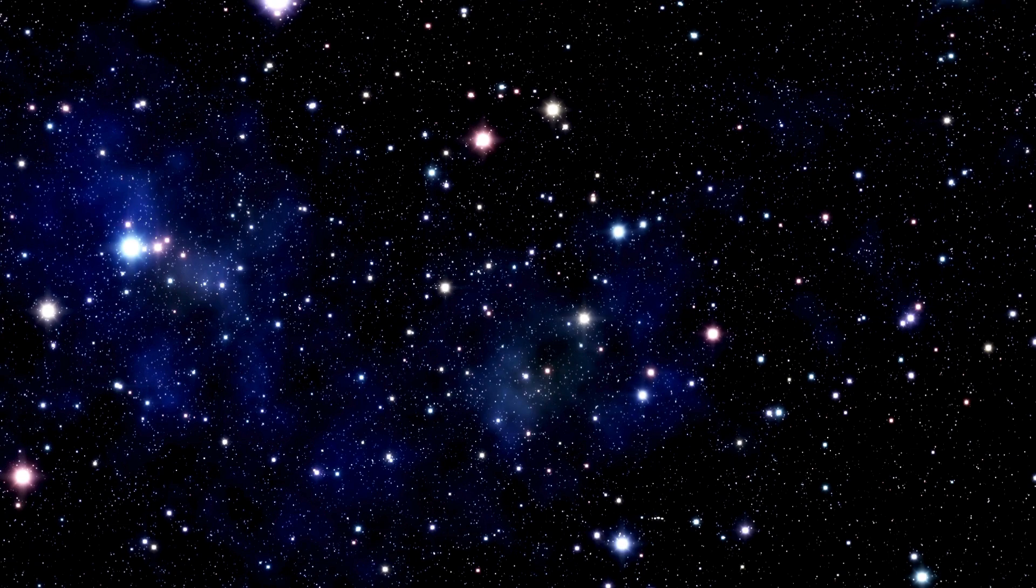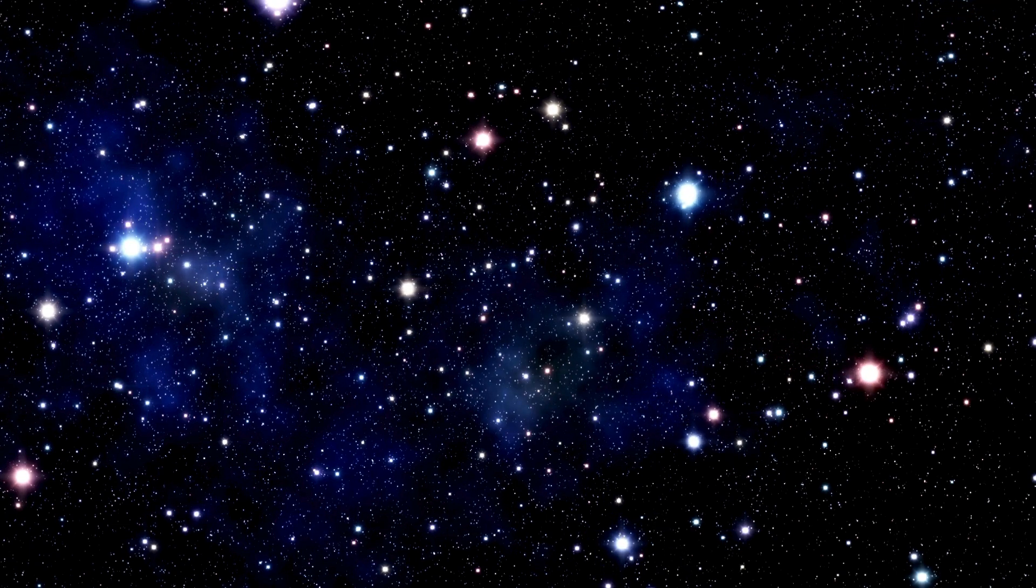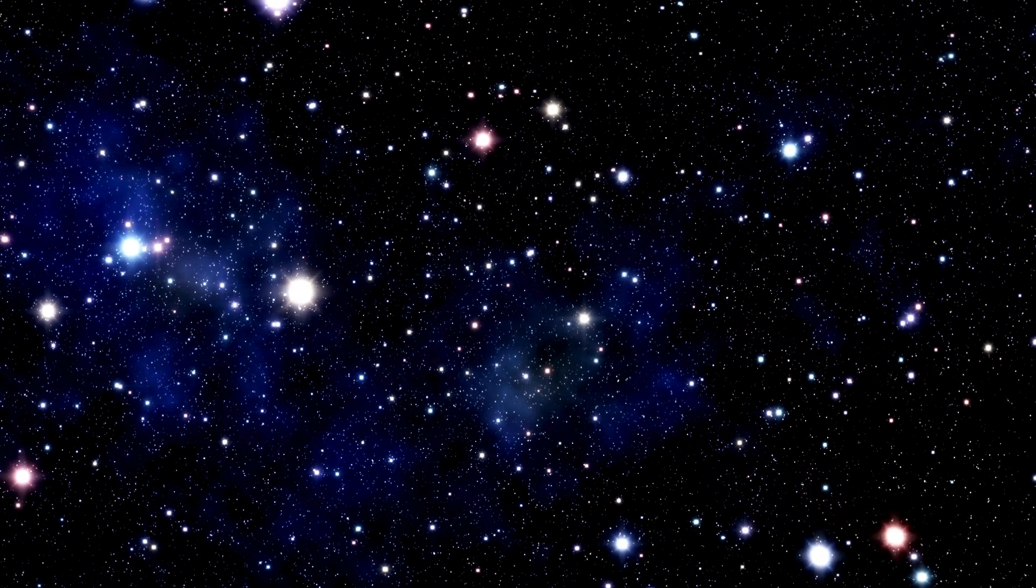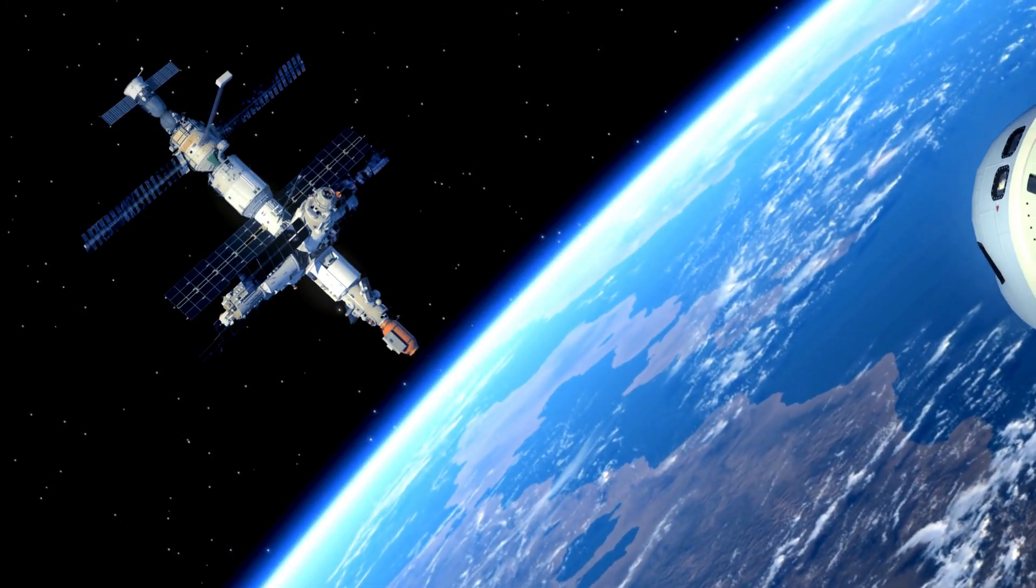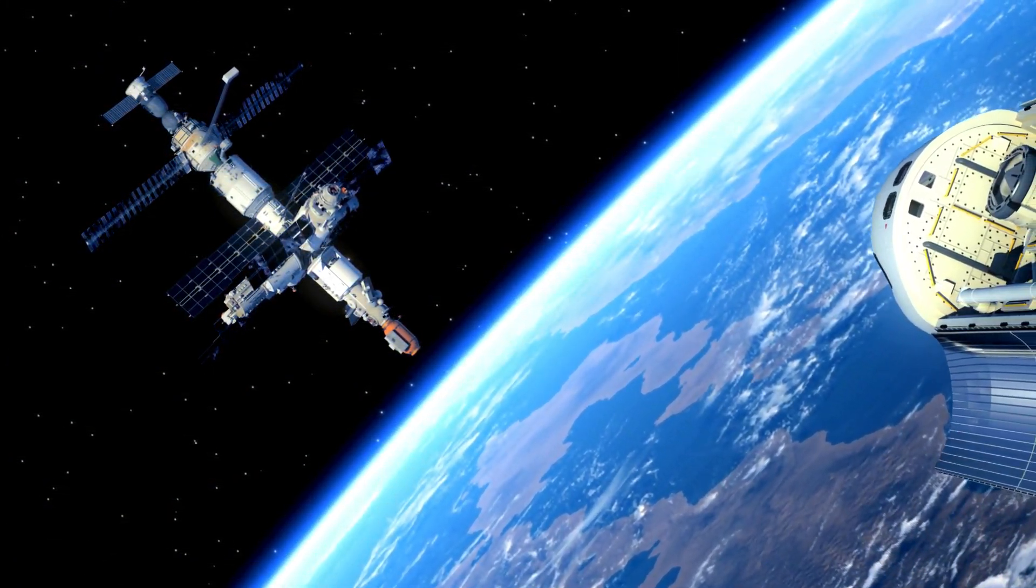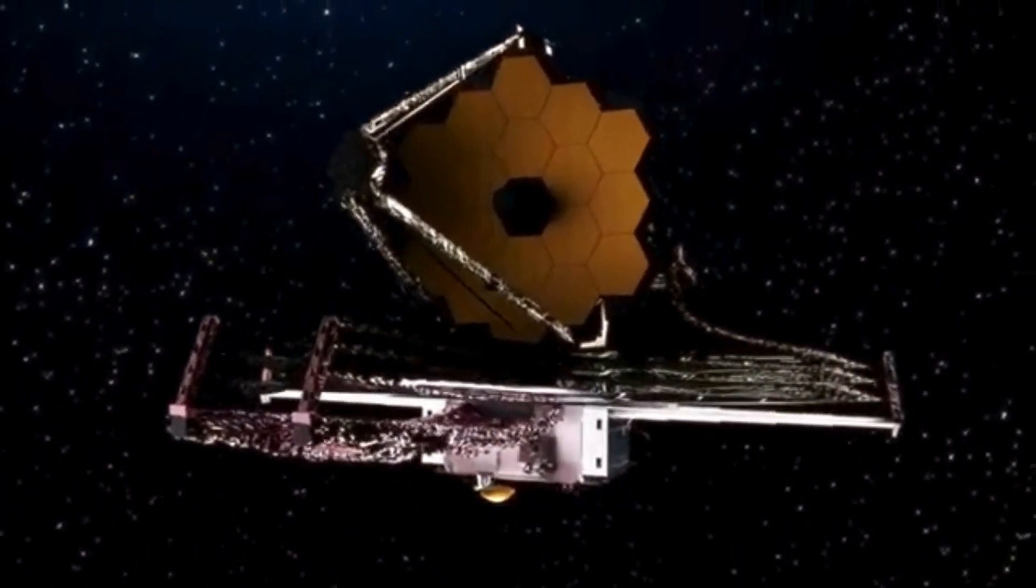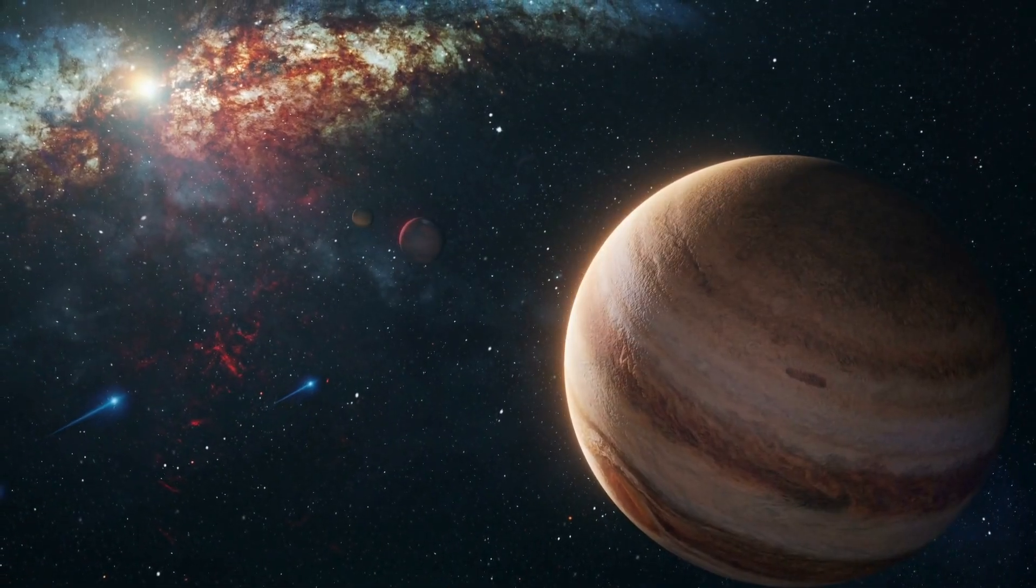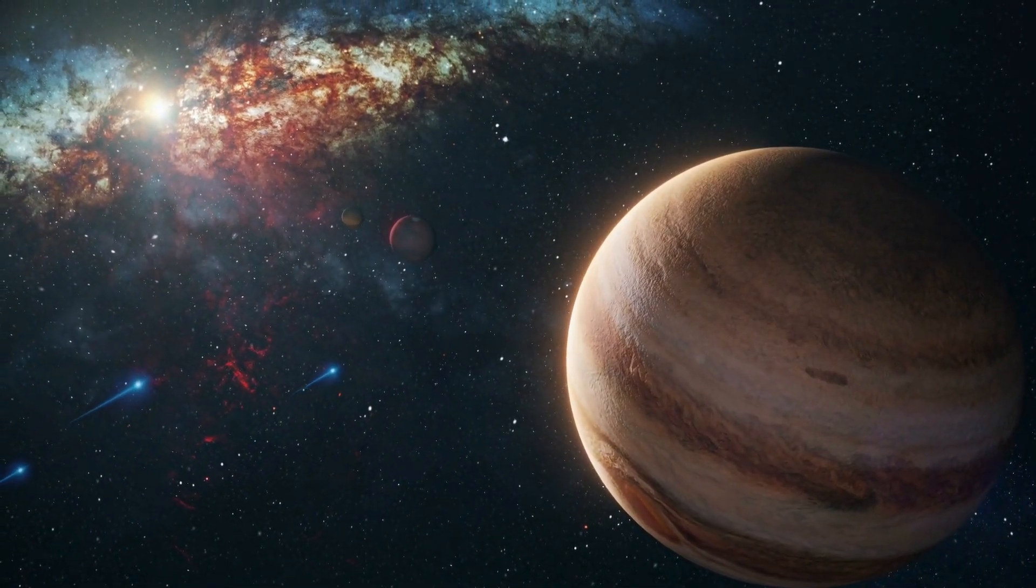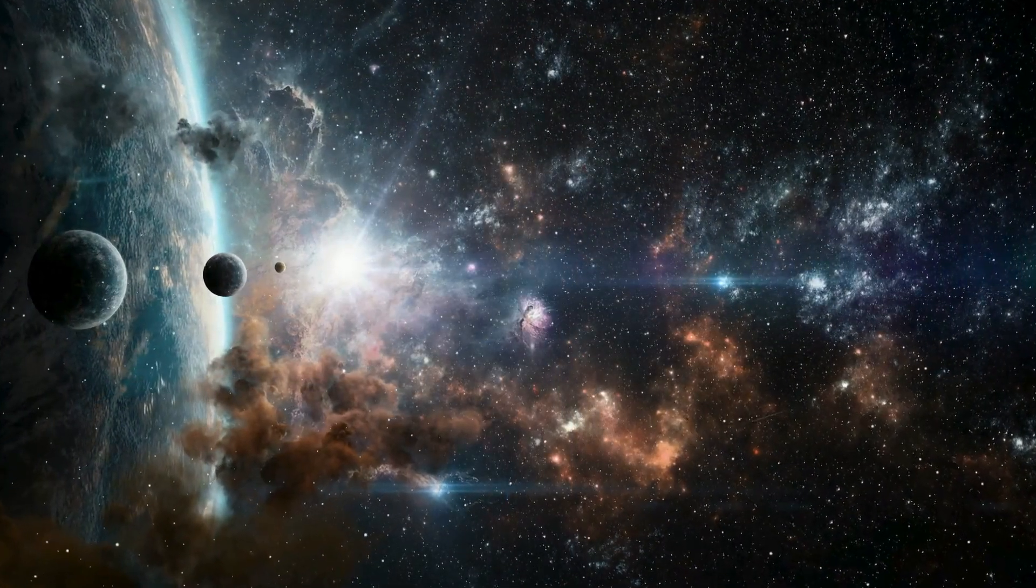Supernovae occur when massive stars exhaust their nuclear fuel, resulting in a gravitational collapse followed by a colossal explosion. These events release immense amounts of radiation, including gamma rays, which can travel across vast intergalactic distances.